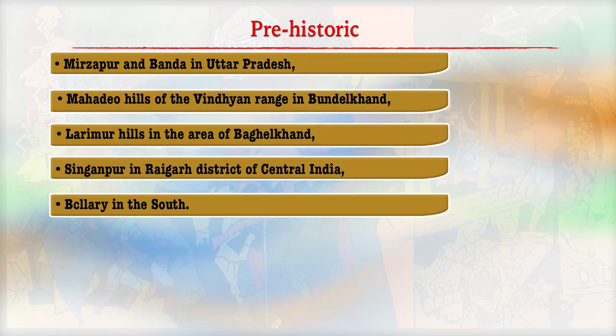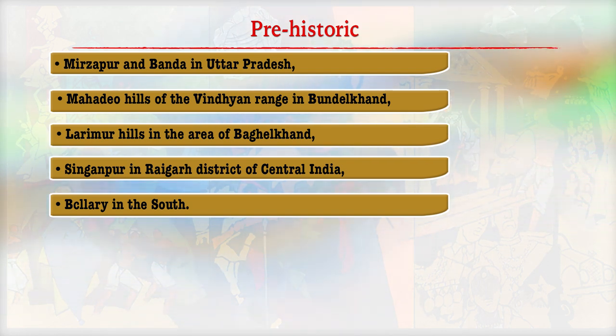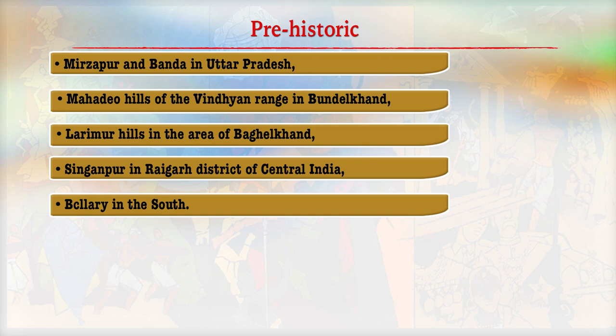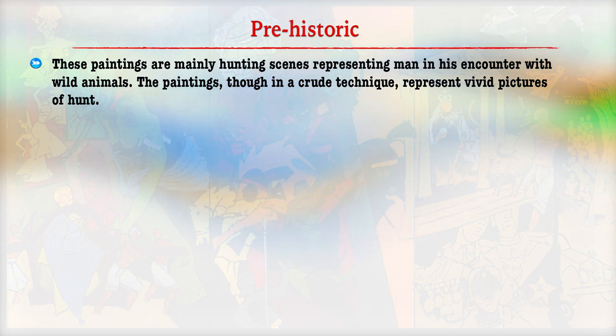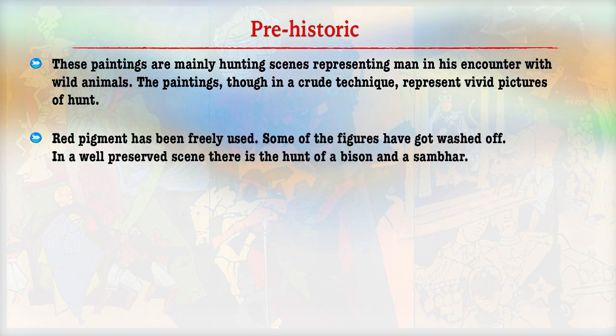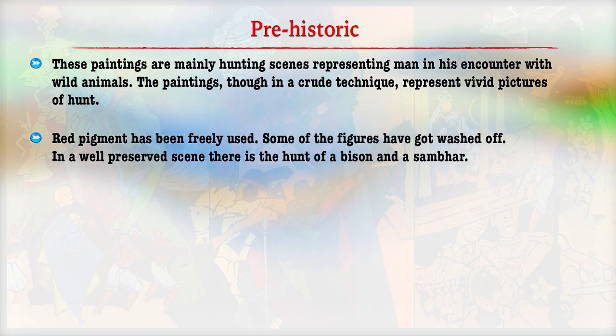Now let me discuss the prehistoric paintings and the places where they are found. The earliest paintings in India have been found in primitive caves and rock shelters in Mirzapur and Banda in Uttar Pradesh, Meheduva Hills of Vindhya Range in Bundelkhand, Larimore Hills in the areas of Vaghilkhand, Sringapur in Raigada district of central India, and Bellari in the south. These paintings are mainly hunting scenes representing man in his encounter with wild animals. The paintings, though in crude technique, depict pictures of hunts, and red pigment has been freely used.